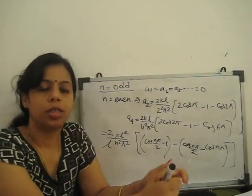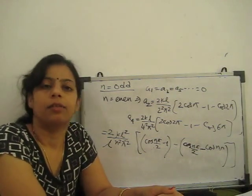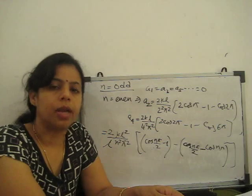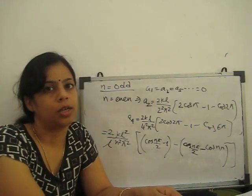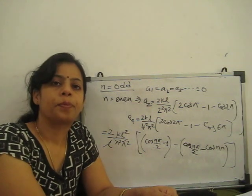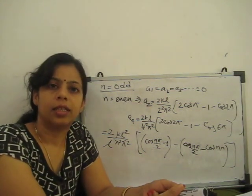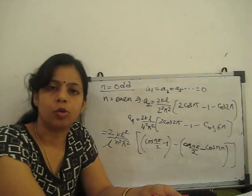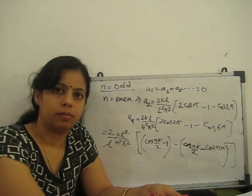Substituting the values of a₀ and aₙ into the series gives the half-range cosine series for the given piecewise function. That is all about the Fourier series. These videos should help in understanding how to solve Fourier series problems. Thank you very much.